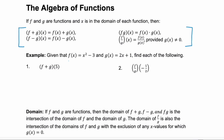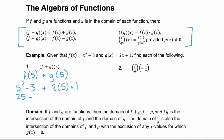Let's look at an example. We're given two functions, f of x and g of x, and we're asked to find each of the following. First, we need to find f plus g of 5. To do that we're going to find f of 5 and add that to g of 5. So f of 5 — substituting in 5 — gives us 5 squared minus 3. Adding g of 5, which is 2 times 5 plus 1. Now 25 minus 3 is 22, plus 10 is 32, plus 1 equals 33. So f plus g of 5 equals 33.